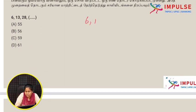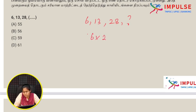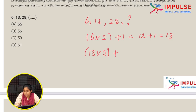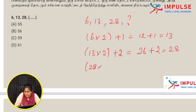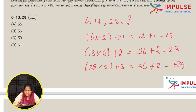Next question: 6, 13, 28, ?. The logic is: 6 × 2 plus 1 equals 13. Then 13 × 2 plus 2 equals 28. Then 28 × 2 plus 3 equals 59. So the missing number is 59. Option C.